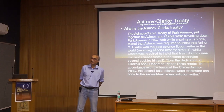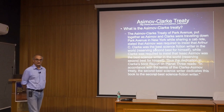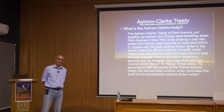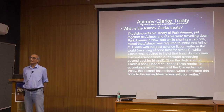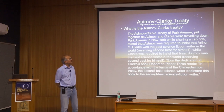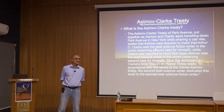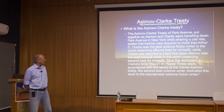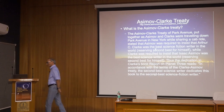The story is that Asimov and Clarke were riding together in a taxi in New York one day, arguing about who was the better writer. They came to an agreement later called the Asimov-Clarke Treaty. Asimov was required to insist that Arthur Clarke was the best science fiction writer in the world — with Asimov second — while Asimov would be the best science writer in the world, with Clarke second best. As far as I know, they kept to this agreement for the rest of their lives.